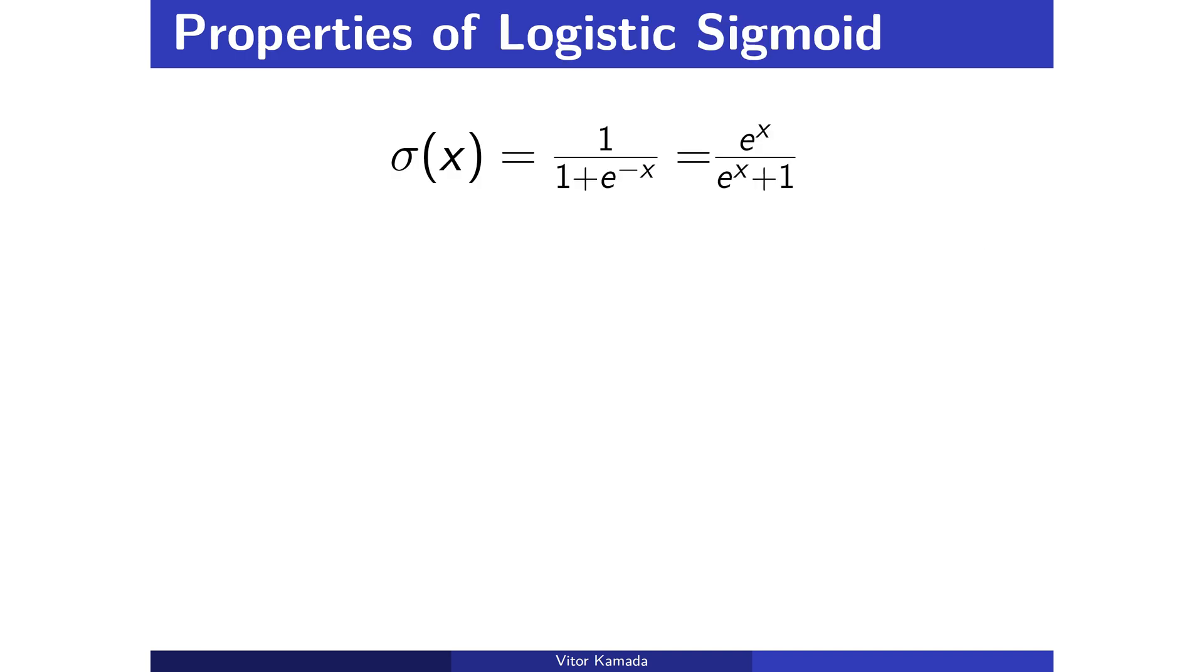Let's see other properties of the logistic function. If you multiply both the numerator and denominator of the logistic function by e to the x, you're going to get e to the x over e to the x plus 1. And what do we get if you do 1 minus sigma x? We're going to get 1 over e to the x plus 1. We are going to see when you're going to use these two expressions.